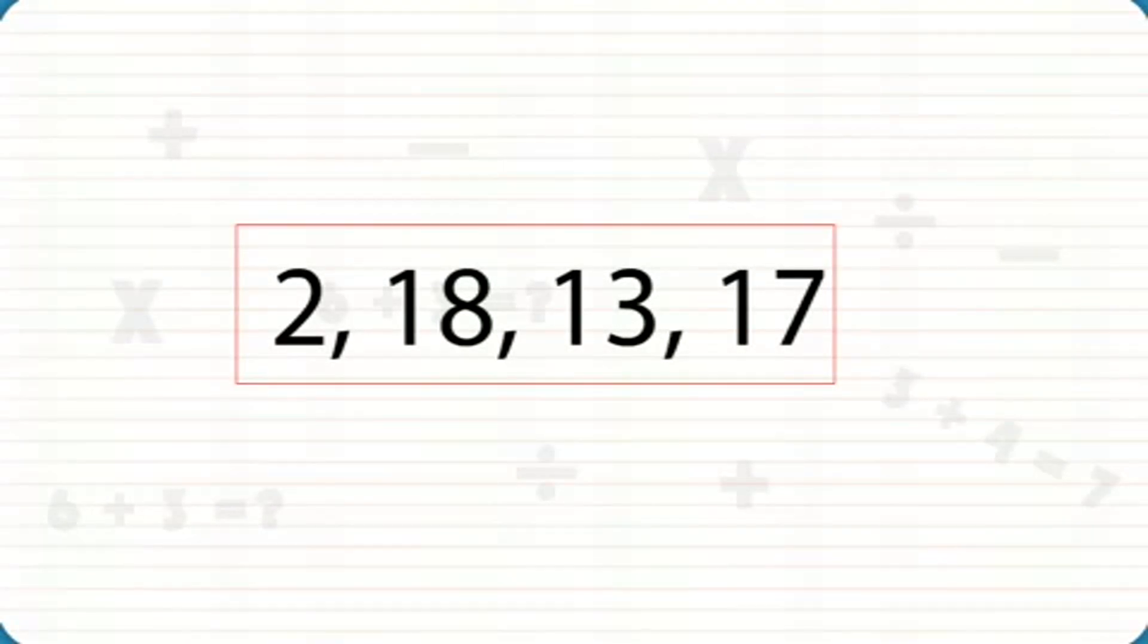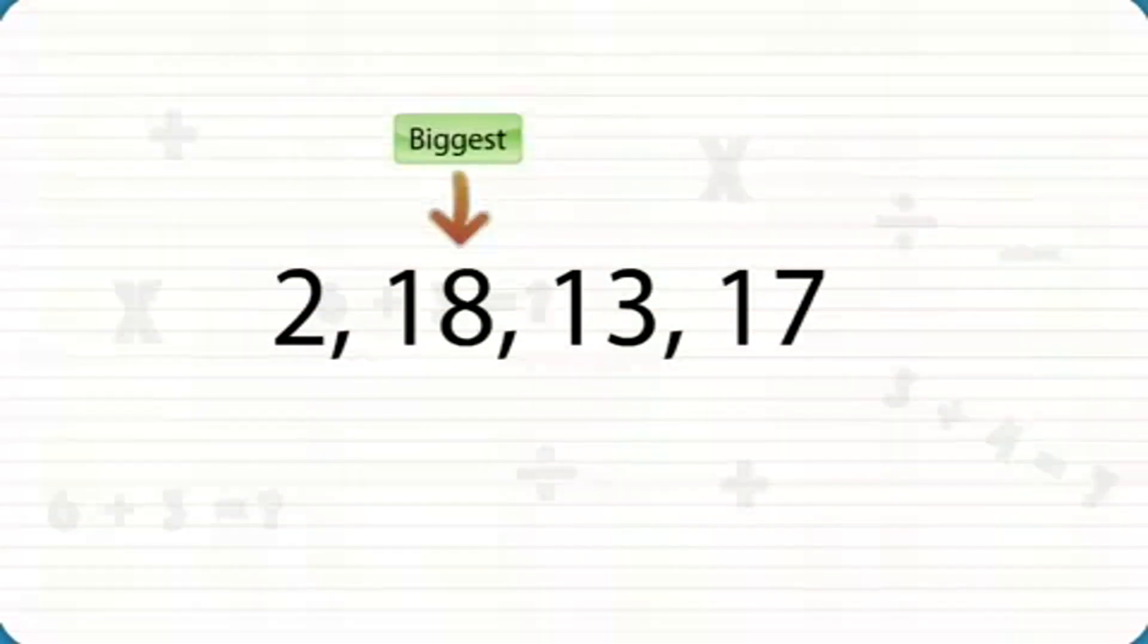Look at the numbers 2, 18, 13, and 17. The biggest number is 18 and the smallest number is 2. We have arranged these numbers in the following order.